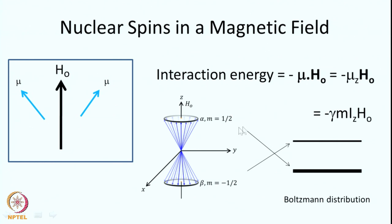For a spin-half nucleus there are two orientations, represented as alpha and beta states. The alpha state has its z component parallel to the magnetic field, and the beta state has spins oriented anti-parallel to the field. The alpha state has lower energy for positive gamma — and in most cases we deal with positive gamma, except nitrogen-15 which has negative gamma — while the beta state has higher energy.